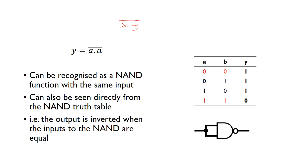So rather than having X or Y or A and B on our inputs, we've got A and A on the inputs. And we can see that directly from the truth table. If you look at the NAND gate truth table, any time the inputs are the same, the output is just the opposite.